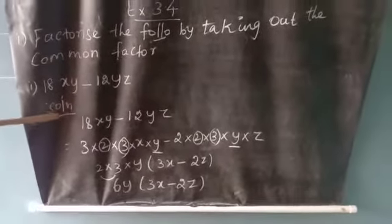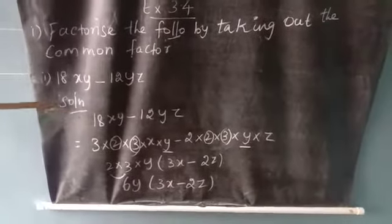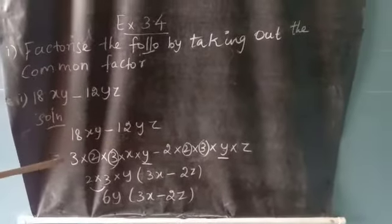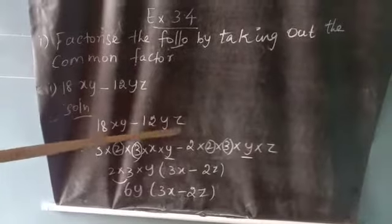18xy minus 12yz. So first you write the given one, 18xy minus 12yz.